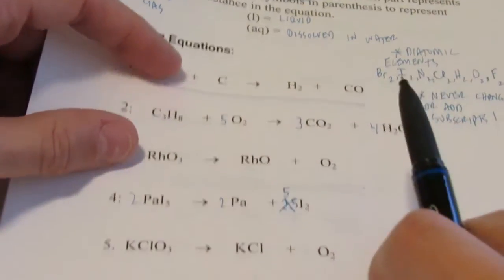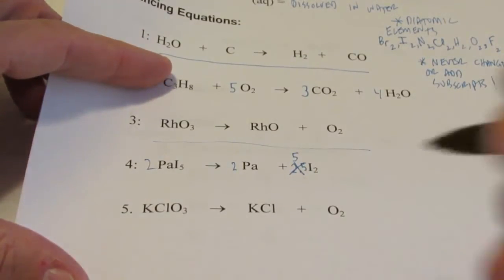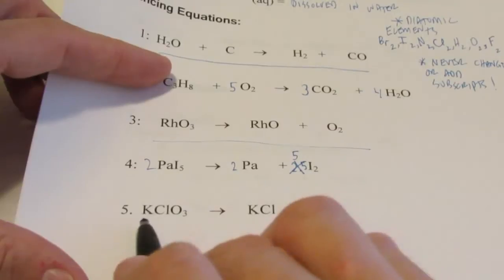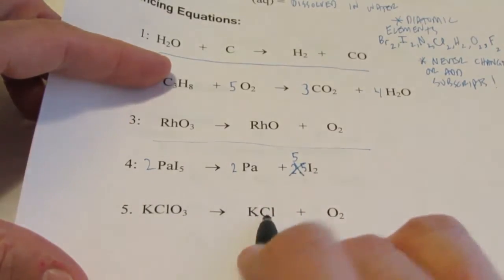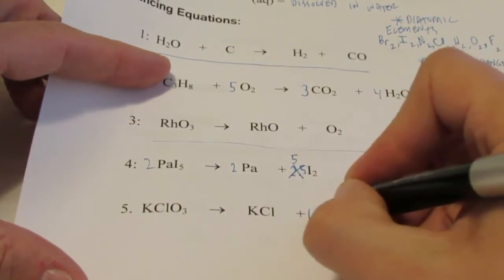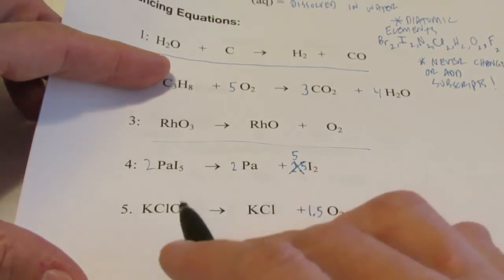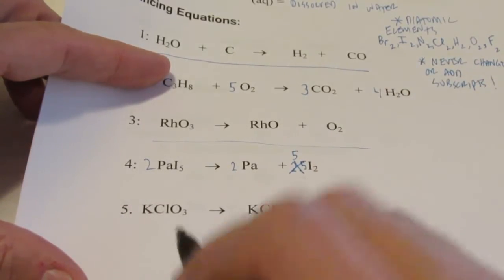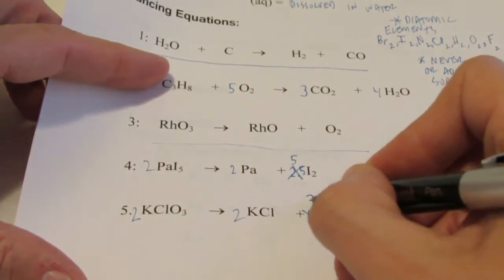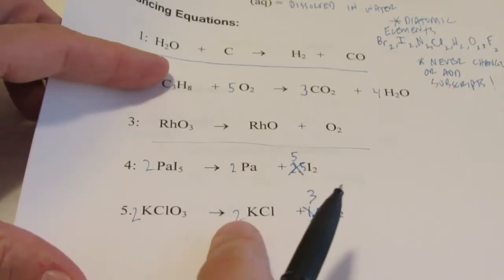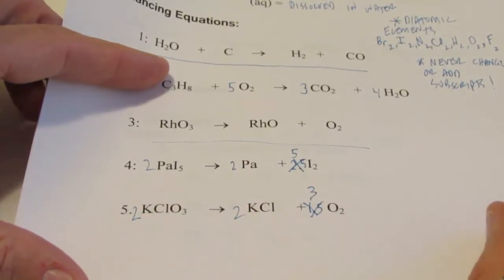Number five: KClO3 makes KCl and O2. One potassium on both sides, one chlorine on both sides. Oxygen gives one and a half on this side, giving three oxygens — but we need whole numbers, so double everything: put a 2, a 2, and change that to a 3. Now there are two potassiums, two chlorines, and six oxygens. Voilà!